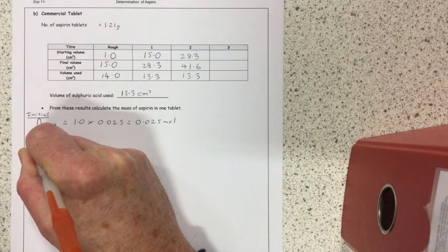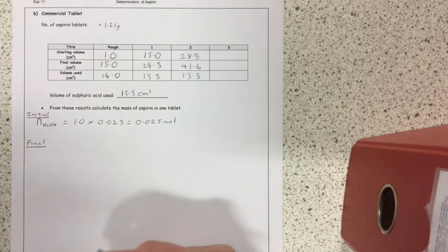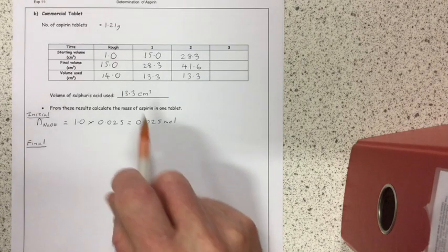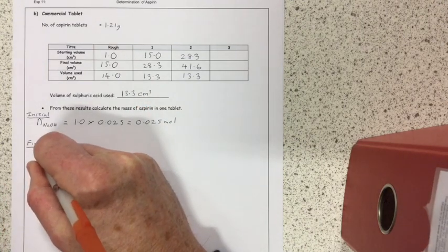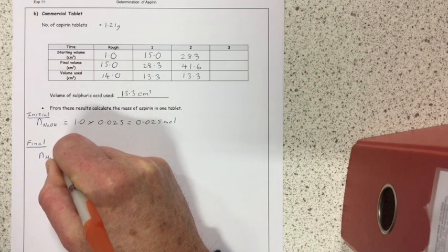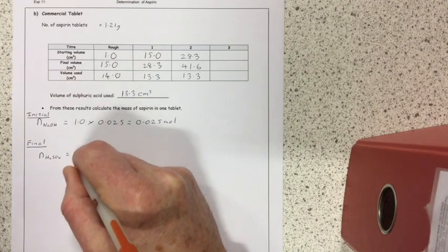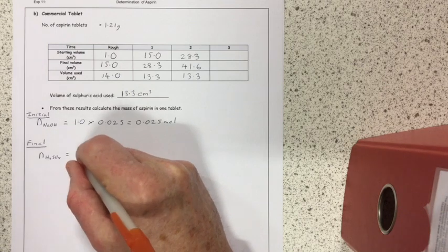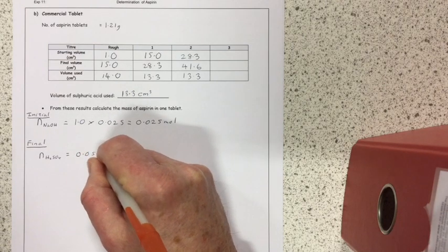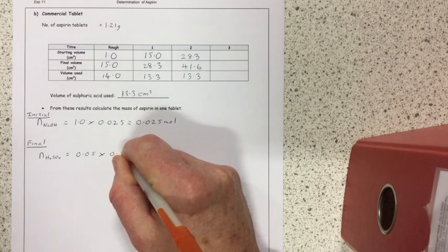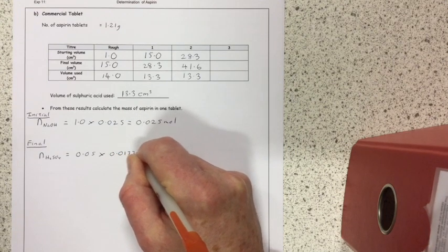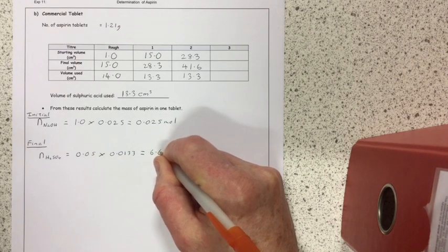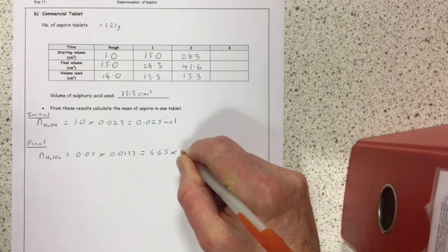Then, we have to work out how many moles of sodium hydroxide were left over at the end. So, to do that, we used the results from our titration. So, the number of moles of sulfuric acid in the titration, where the concentration of the sulfuric acid was 0.05 moles per liter. We used 13.3, so the volume is 0.0133. So, the number of moles of sulfuric acid was 6.65 times 10 to minus 4 moles.